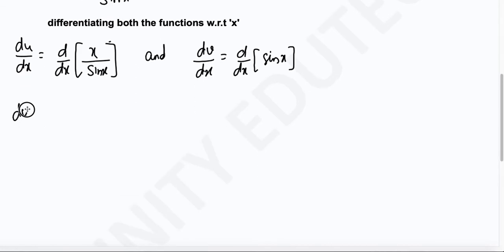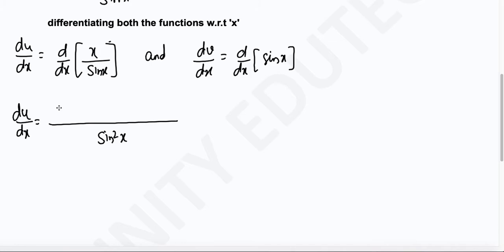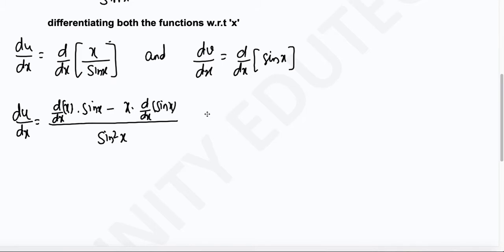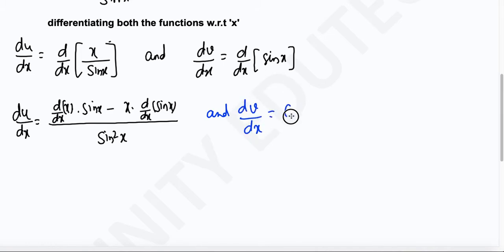Applying the quotient rule, du/dx equals: denominator squared, that is sin²(x), in the denominator. Then differentiation of numerator multiplied by denominator as it is, minus numerator as it is multiplied by differentiation of the denominator. And for dv/dx, sin differentiates to cos(x).